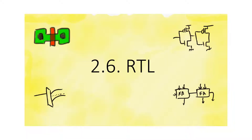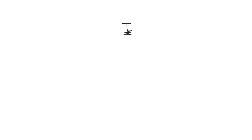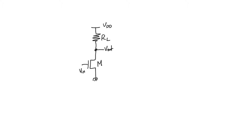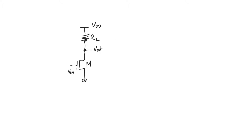Moving on from bipolar logic, let's move to the first logic family that uses MOSFETs, and it's called RTL, which stands for resistor-to-transistor logic. RTL consists of a single passive resistance plus a single MOSFET. When we look at a new logic family, we will basically be looking at its inverter first, because understanding the inverter helps us understand everything about the logic family. RTL refers to this particular inverter based on a single passive load RL and a single NMOS transistor called M.